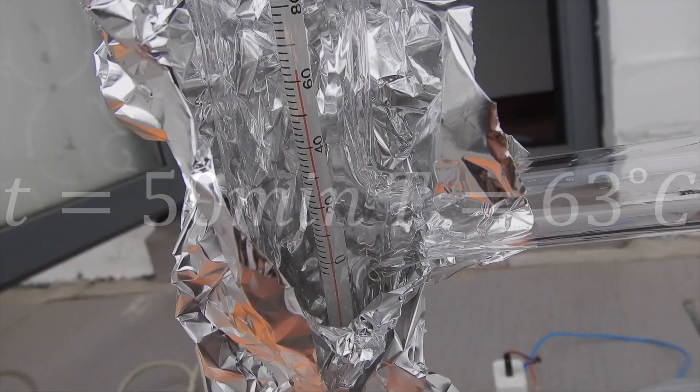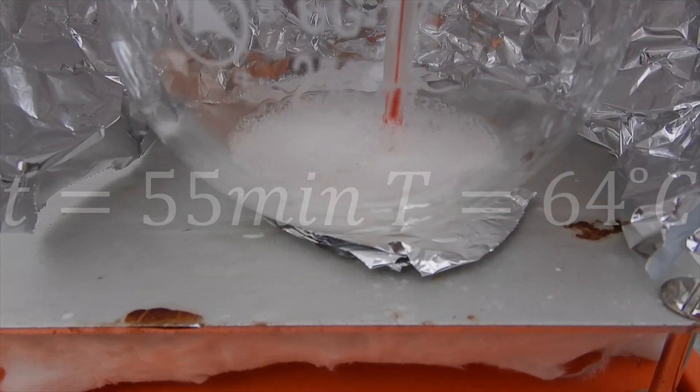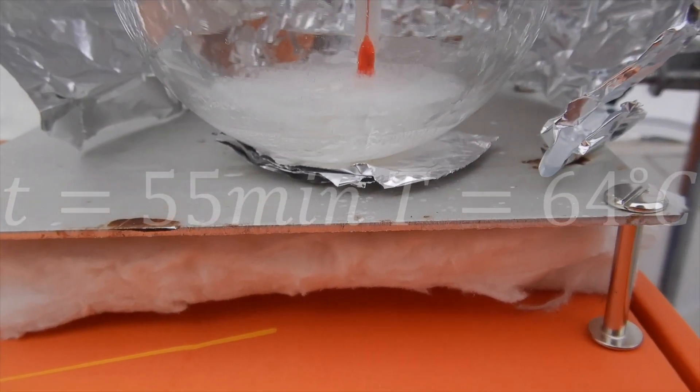The temperature continues to increase to 63 degrees Celsius, and the drip rate lowered to about 1 drop per 2 seconds. Not long after, nearly all the liquid in the flask boiled off.